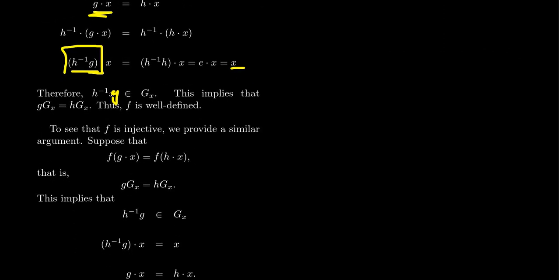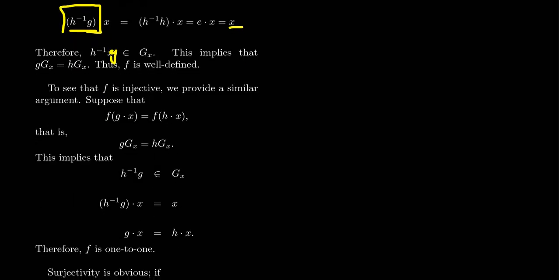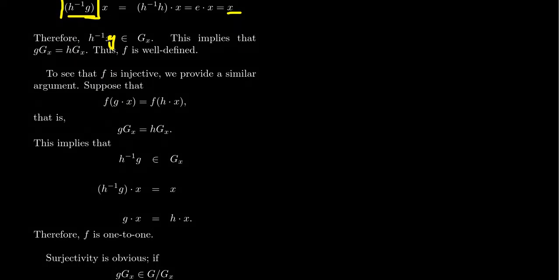All right, so now we have a function. Is it a bijection? Is it one-to-one? That's our next target. To show that it's one-to-one, we're going to consider two elements that have the same image. So f of g dot x equals f of h dot x. We're not assuming that g dot x and h dot x are the same thing anymore. But we're going to prove that they are. Honestly, proving that this is injective is very similar to proving it's well-defined. We're basically going to provide the exact same argument backwards.